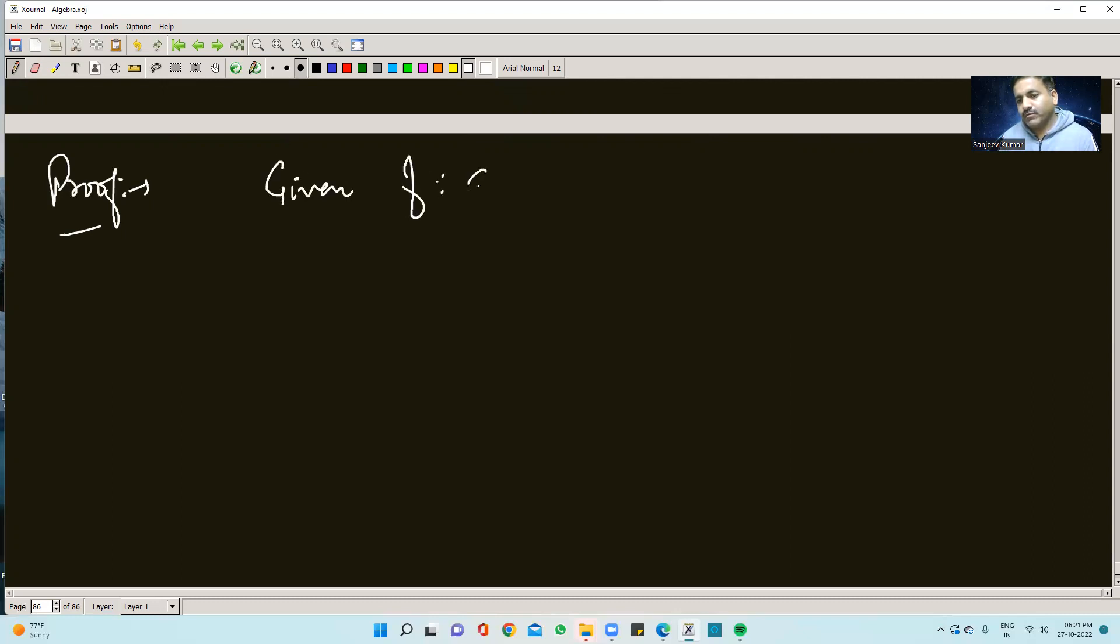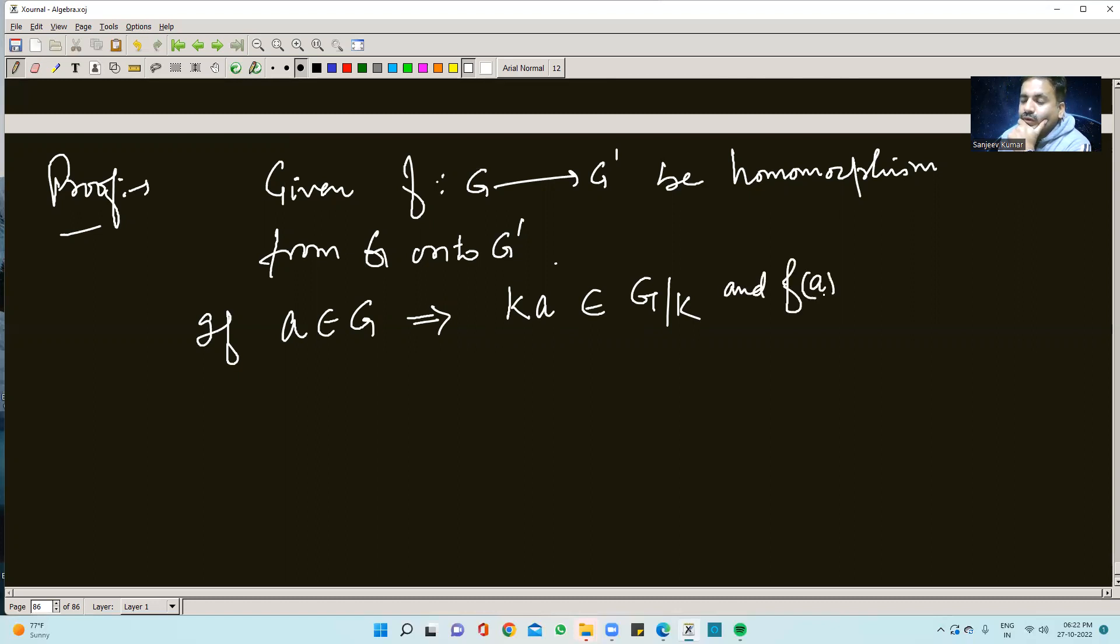First, let's write what is given. Given: F is a mapping from G to G dash, a homomorphism from G onto G dash. If an element a belongs to G, then F of a belongs to G dash. And the coset K a will definitely be in G by K.